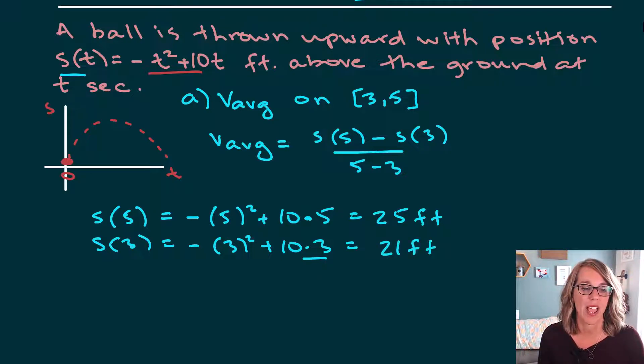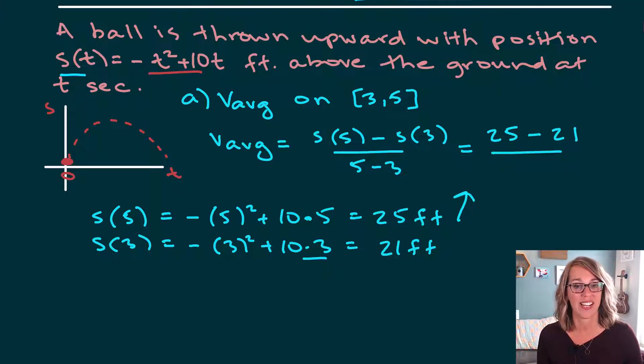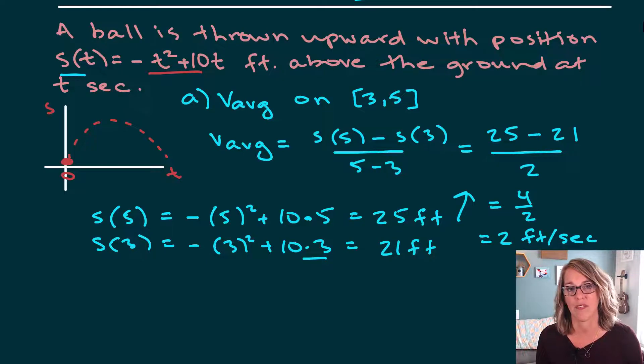So now I'm ready to put my average velocity together. Let's put both of those back up here. So this is equal to 25 minus 21 divided by five minus three, which is equal to two. 25 minus 21 is four. So I get four over two, or we get two feet per second. That's my average velocity.